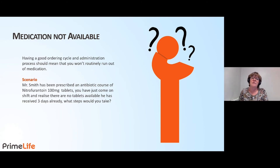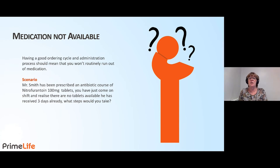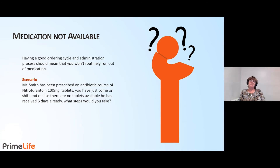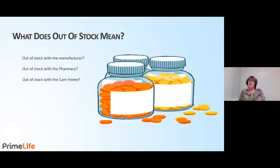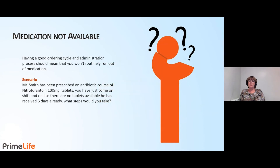Let's have a look at a scenario. Mr. Smith has been prescribed an antibiotic course of nitrofurantoin 100 milligram tablets, and you've just come on shift and realised there are no tablets available. He's received three days' worth already. What steps would you take? First, check the quantity received and check the quantity administered. Is it the fact that the course has been completed?